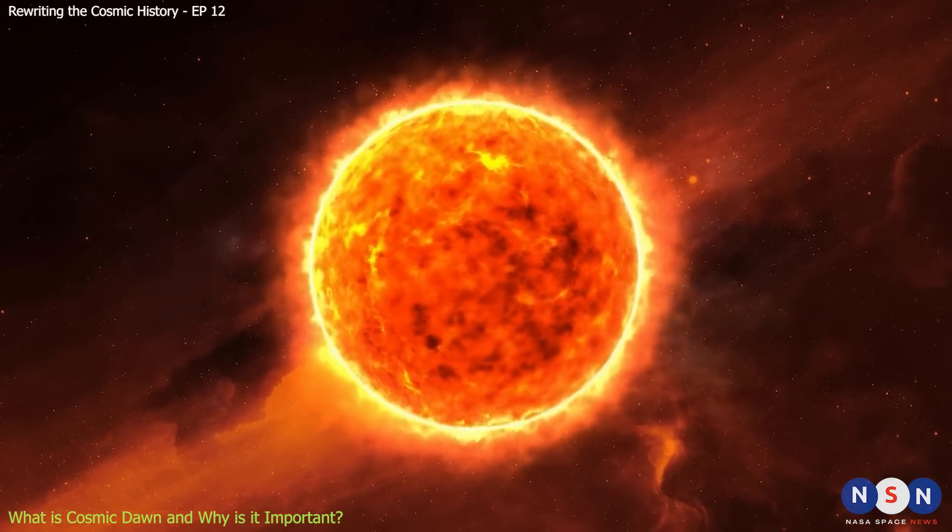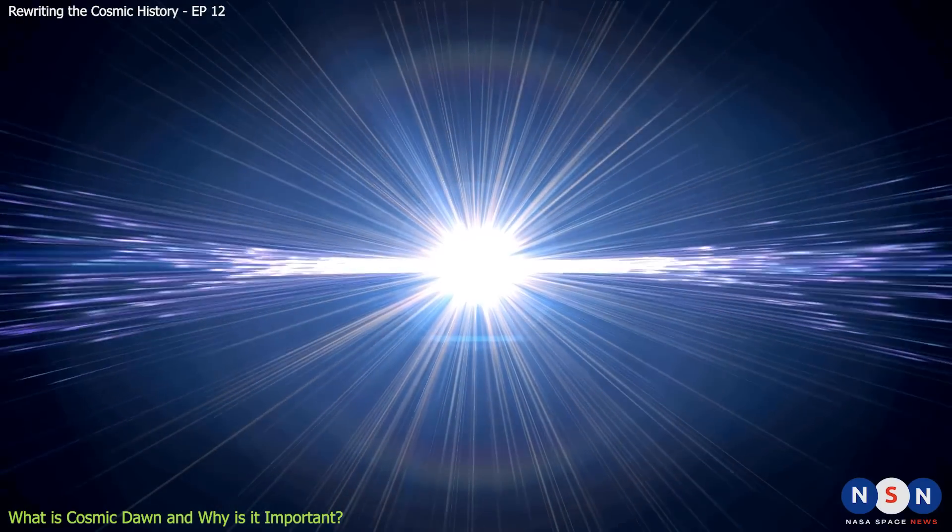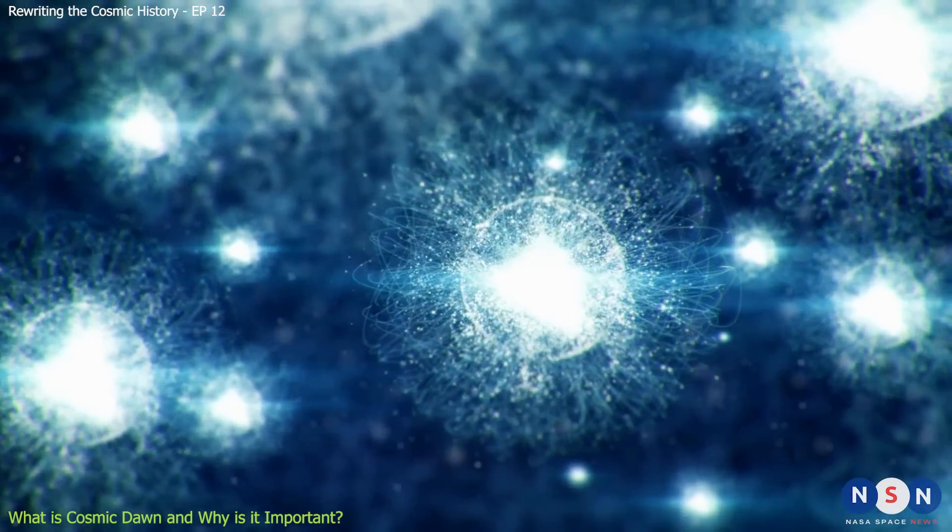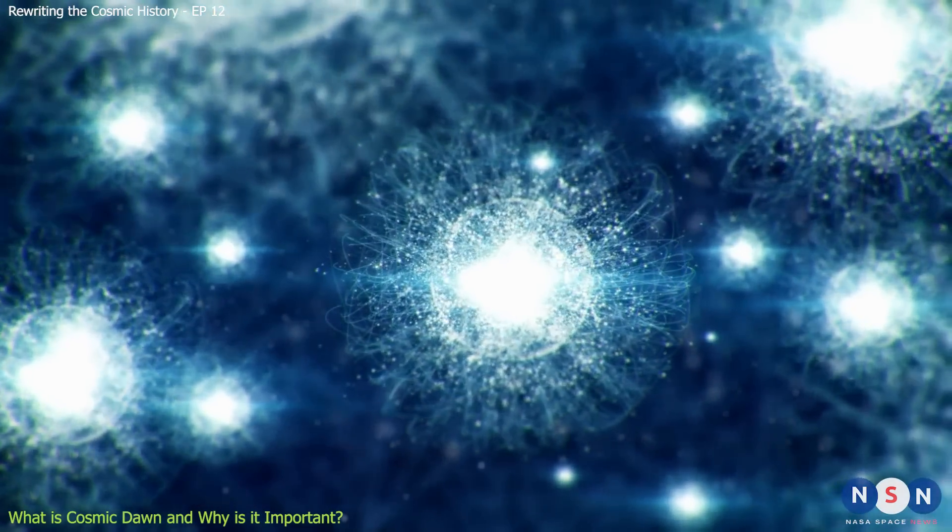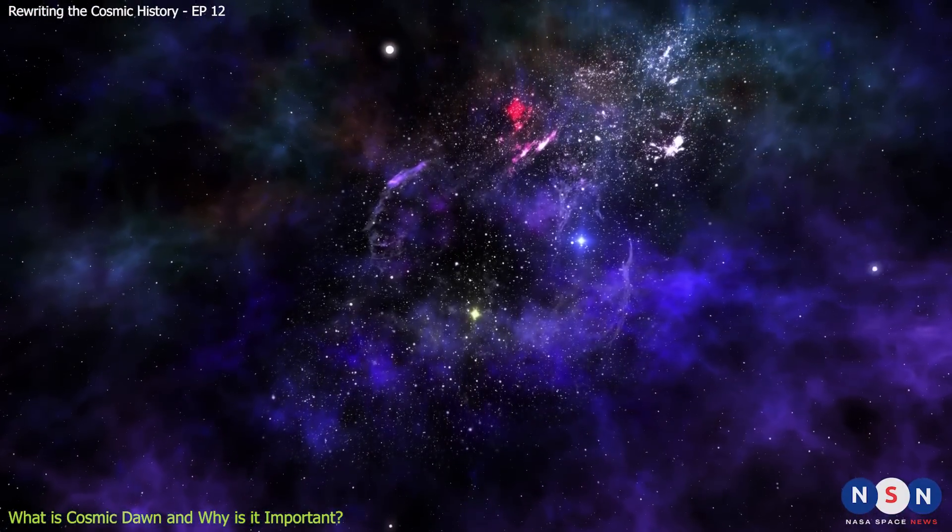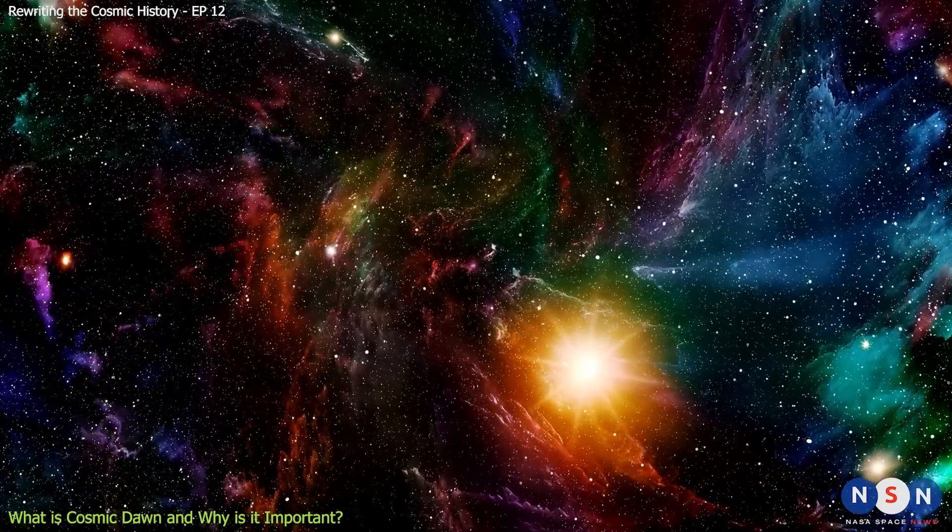They produced a lot of light that could break apart hydrogen atoms again. As these objects formed and shone brightly, they created bubbles of ionized gas around them. These bubbles grew bigger and bigger as more stars and galaxies formed, until they filled the whole universe with ionized gas again.